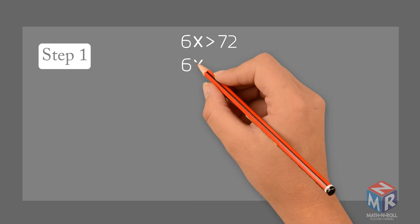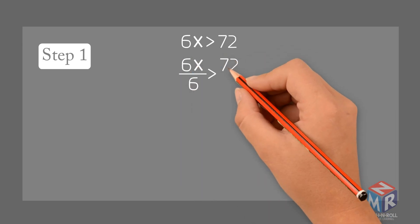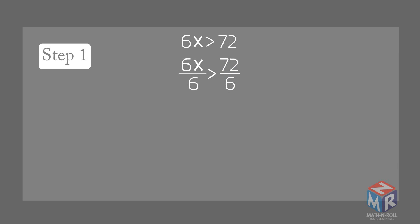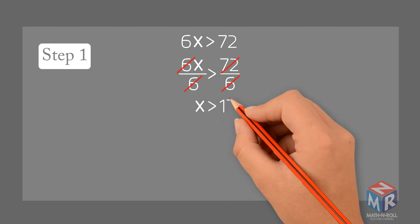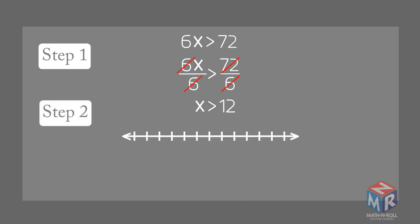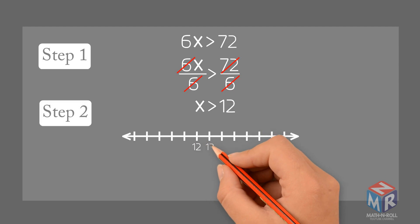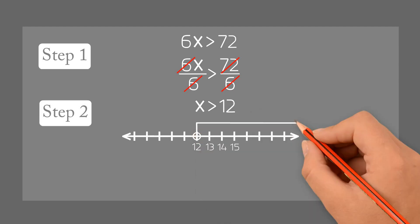Divide both sides by 6. Step 2: Graph the solution. Use an open circle to show that 12 is not a solution.